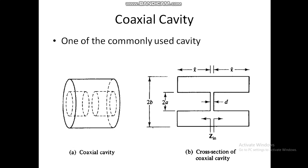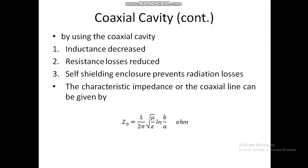A re-entrant cavity is one in which the metallic boundary extends into the interior of the cavity. By using the coaxial cavity: number one, inductance decreases — as needed for high resonant frequency; number two, resistance losses are reduced; and self-shielding enclosure prevents radiation losses.